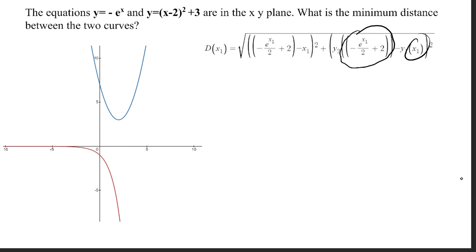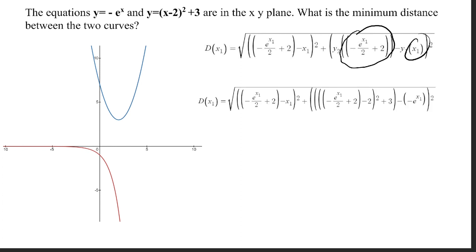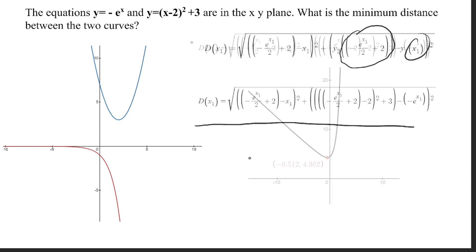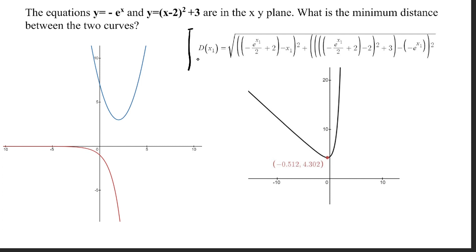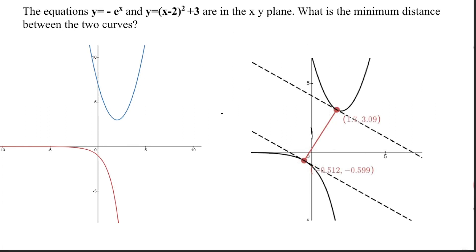The final distance formula finds the value of x1 that yields the minimum distance between the two curves. When graphed on Desmos, we can see that the minimum value occurs at x1 equals negative 0.512 with the distance being 4.302 units. So the minimum distance between these two curves is 4.302 units.